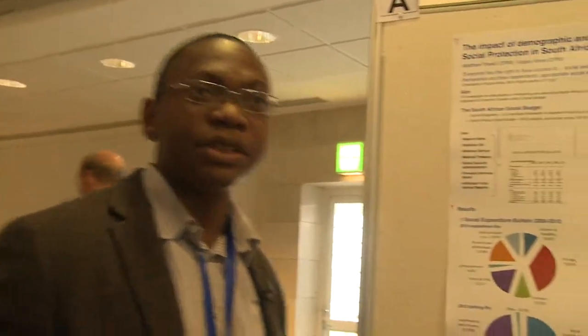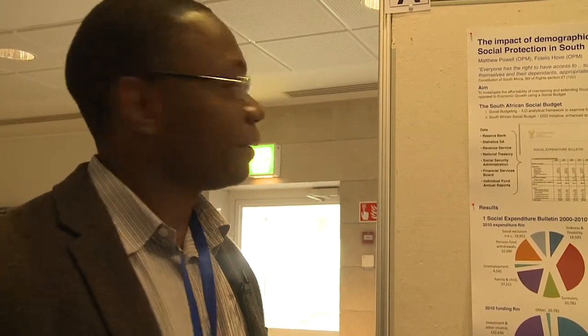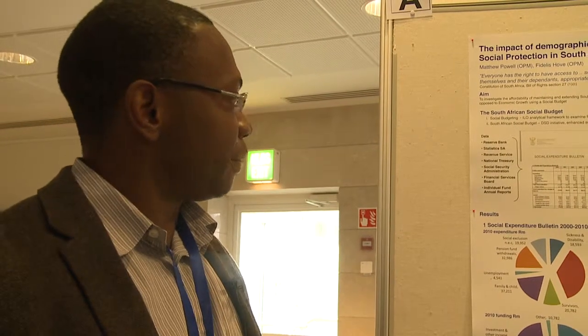In South Africa the social grant system is a very important component of what government is doing to tackle poverty and inequality. If you look at the stats today there are about 16 million beneficiaries of regular monthly payments — tax funded — out of a population of 50 million. For about a fifth of those recipients, social grants actually make up the majority of their income.